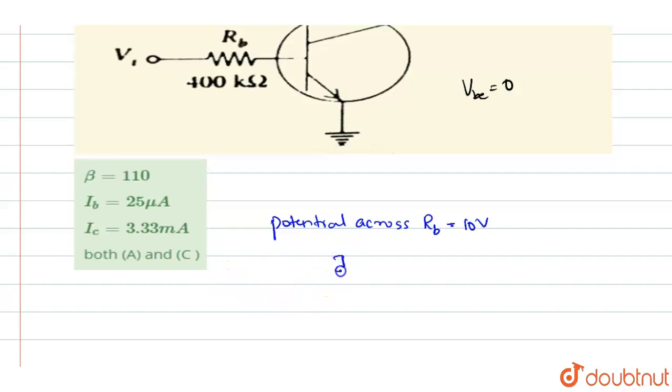Now, IB, the current through the base is equal to the potential 10 divided by the resistance. The resistance they have given is 400 kilo ohms, 400 into 10 power 3. So, IB comes out to be 25 micro ampere. So, this is the base current.